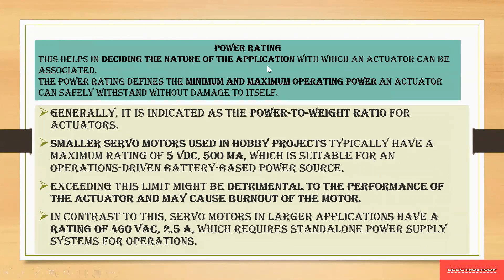The next characteristic is power rating. Only when there is power can an actuator run and cause an action in an application. Based on the power rating, it decides the nature of the application an actuator can be associated with. Power rating defines the minimum and maximum operating power of an actuator. The actuator must operate within this limit; if it exceeds the operating power, damage will be caused inside the actuator.